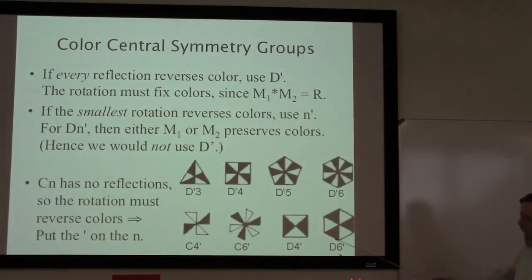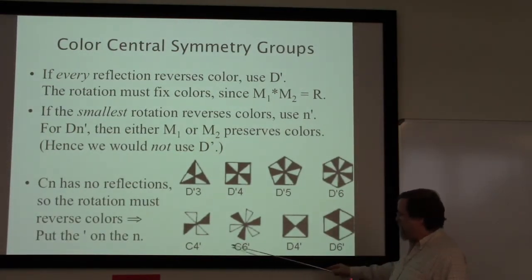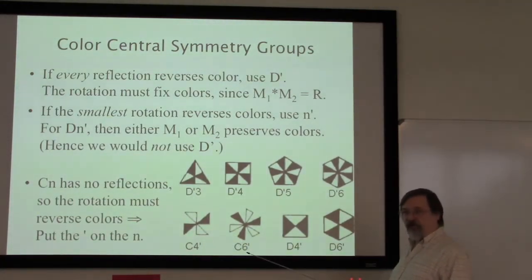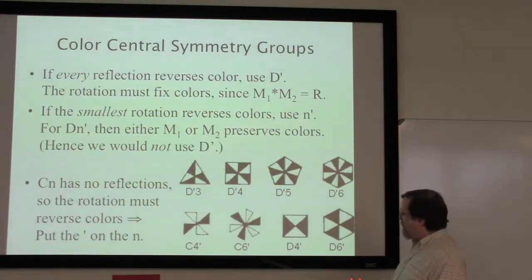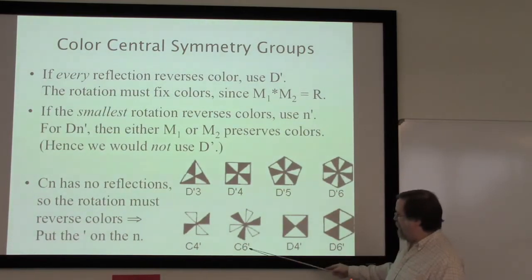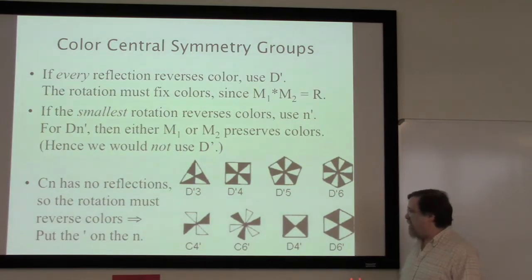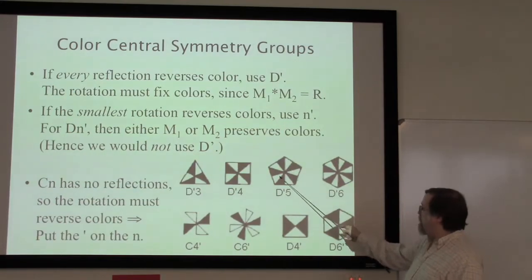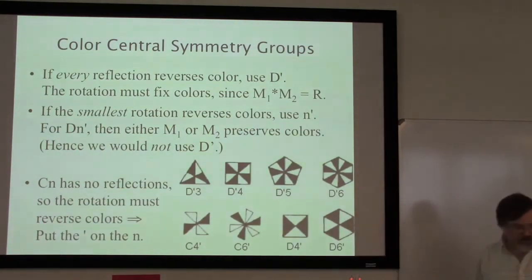We can only get a reversing rotation with even numbers. If we tried with an odd number — say five — we would go around with black on one, black on three, black on five, and then be right next to the one and be in trouble. With even numbers we can break it so that half of them are black and half are white. But with the d prime approach we can end up with interesting symmetries even with an odd number.